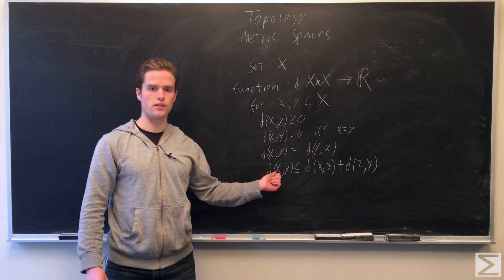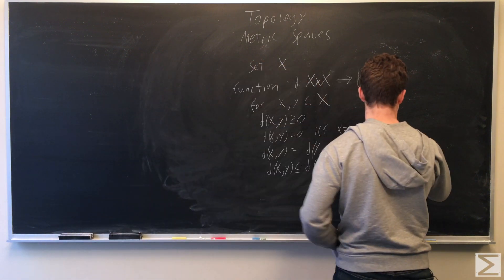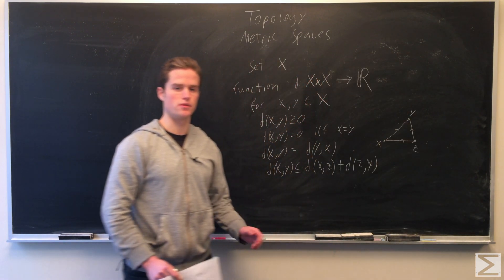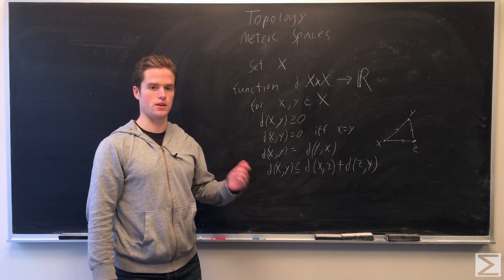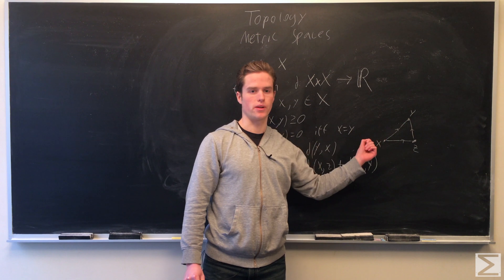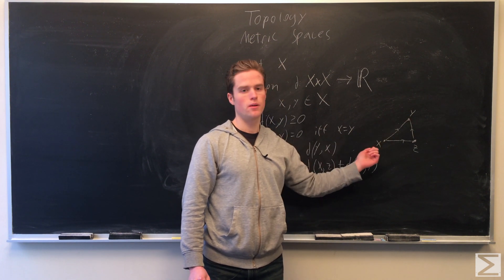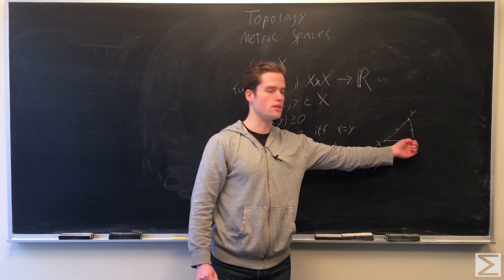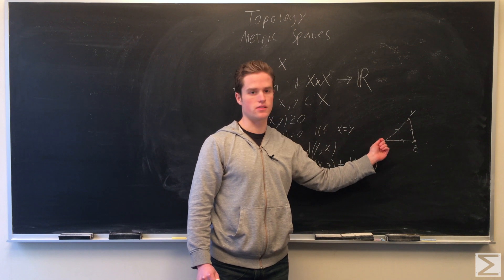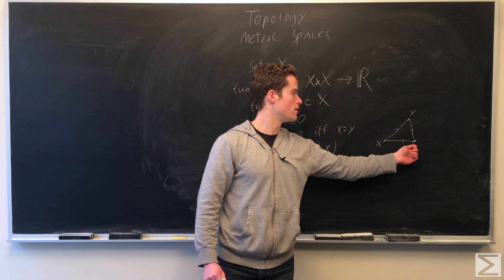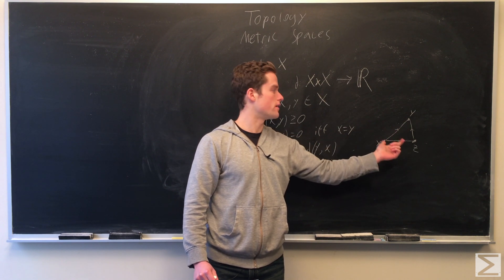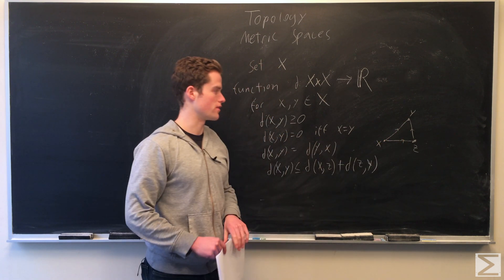This last one is the triangle inequality, and it reflects how in usual Euclidean geometry the shortest distance between any two points is a straight line. If we want to get from x to y as quickly as possible, we just go straight. But if we take any other point z and make a triangle — going from x to z and then z to y — the total distance traveled is always greater than or equal to the direct distance from x to y.